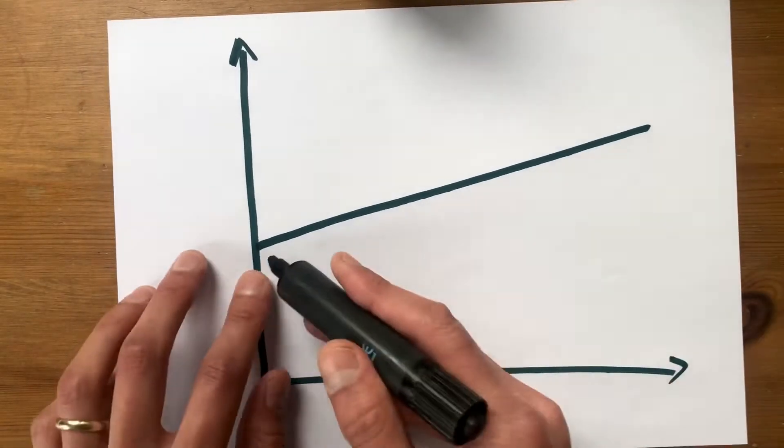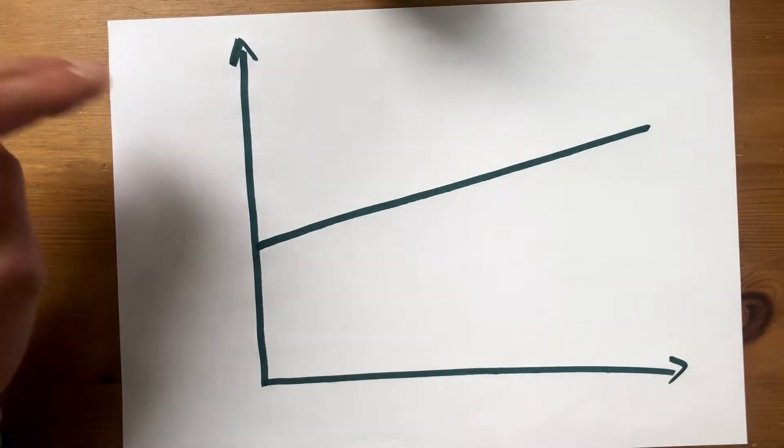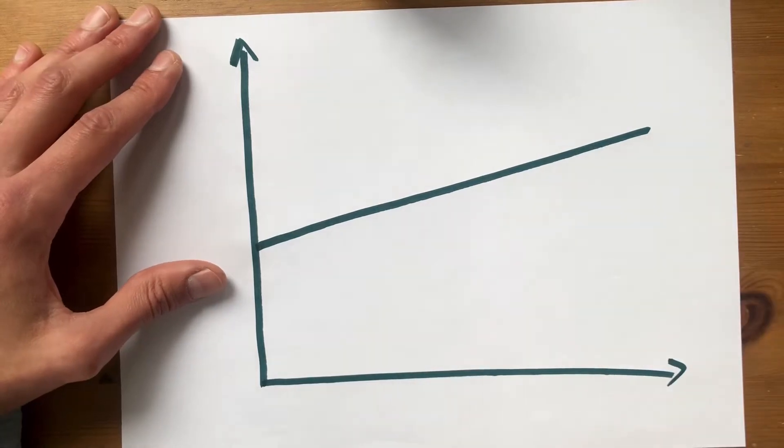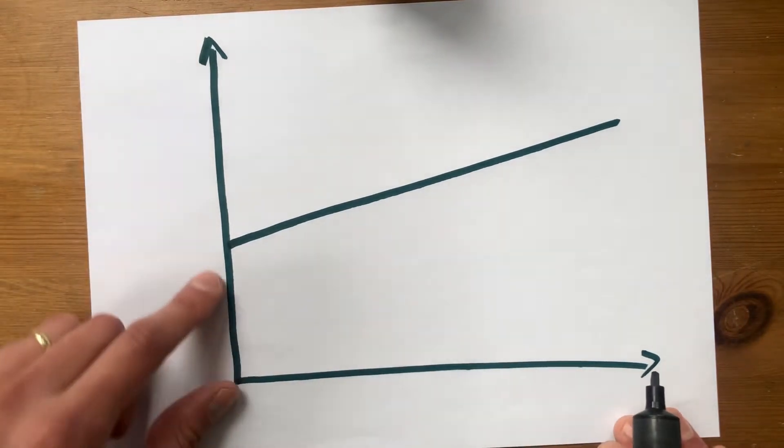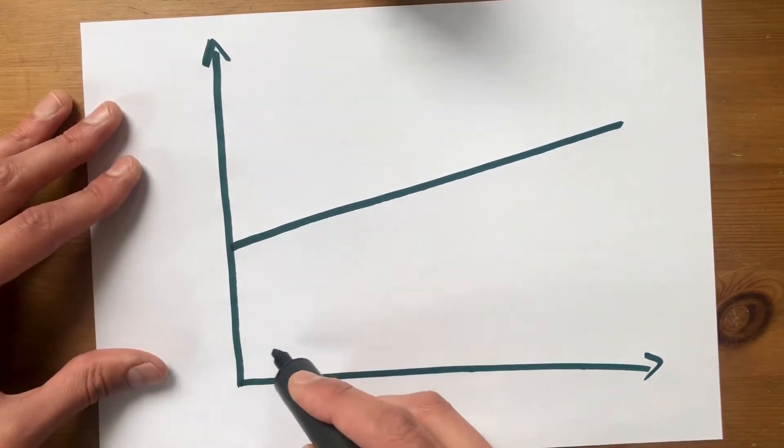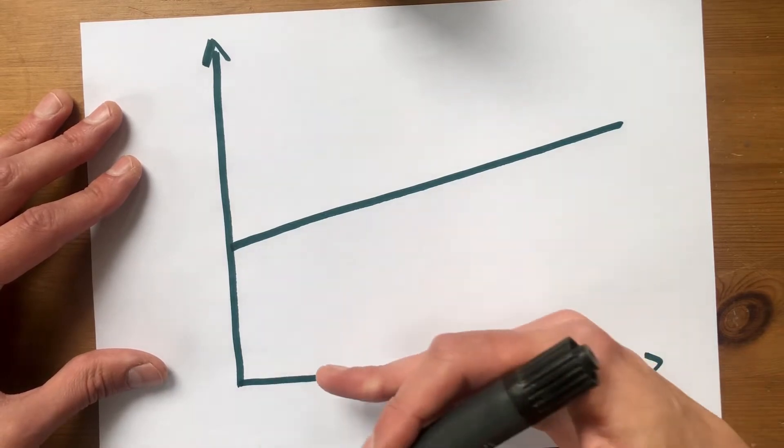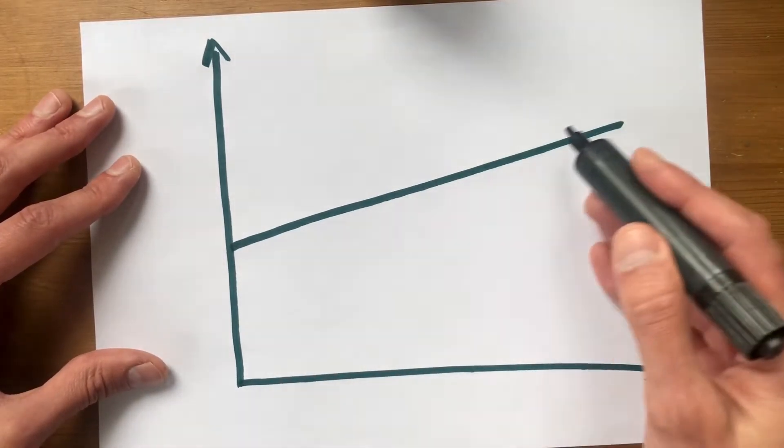So you can see this is not a fixed impedance anymore. This is what we call a variable impedance. Not only that, but it's a high impedance. Our buffer was low impedance down here. We've gone up and it now is variable.